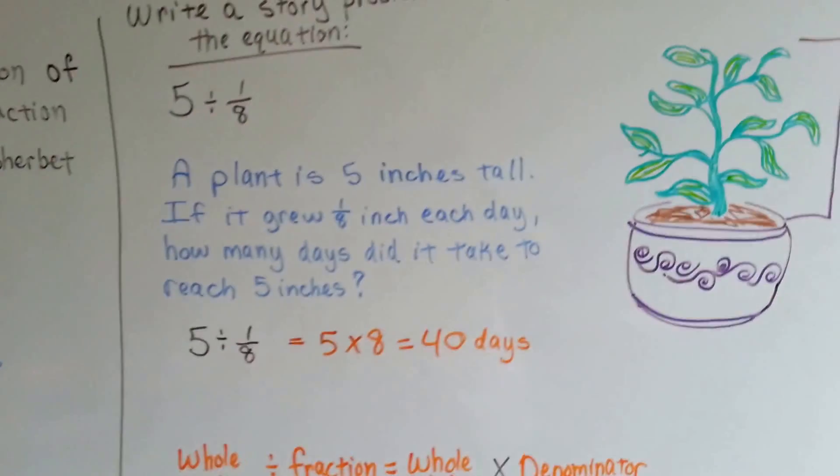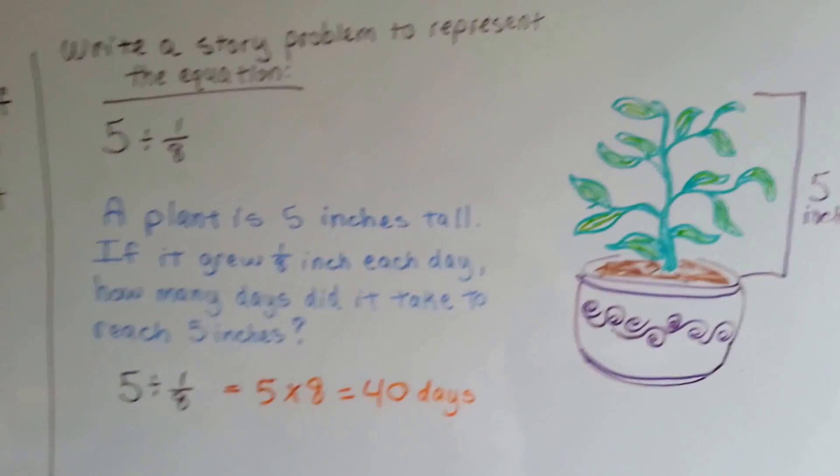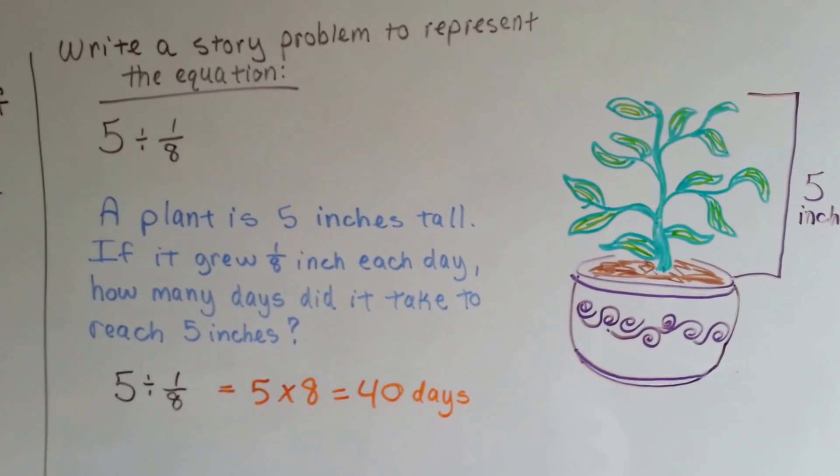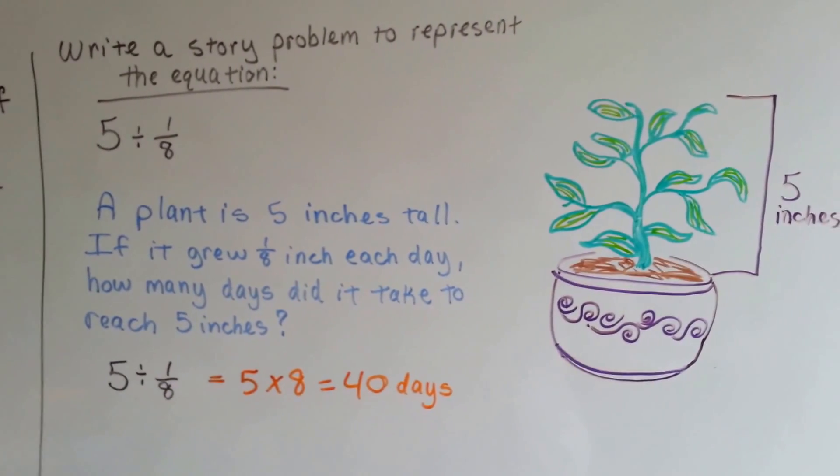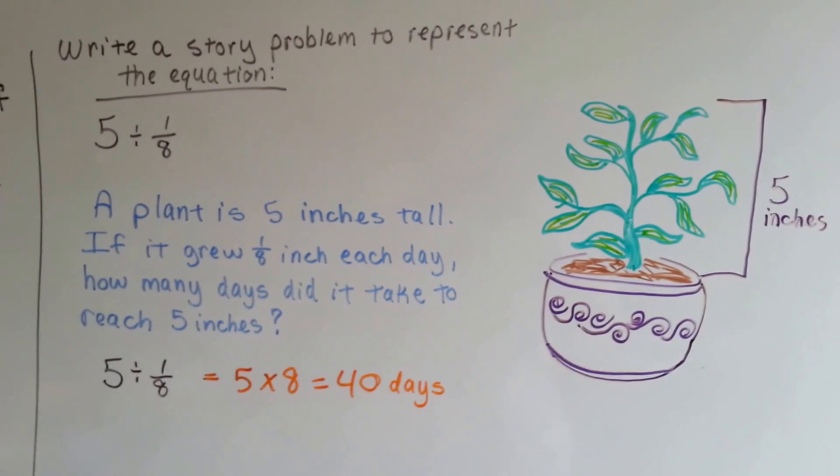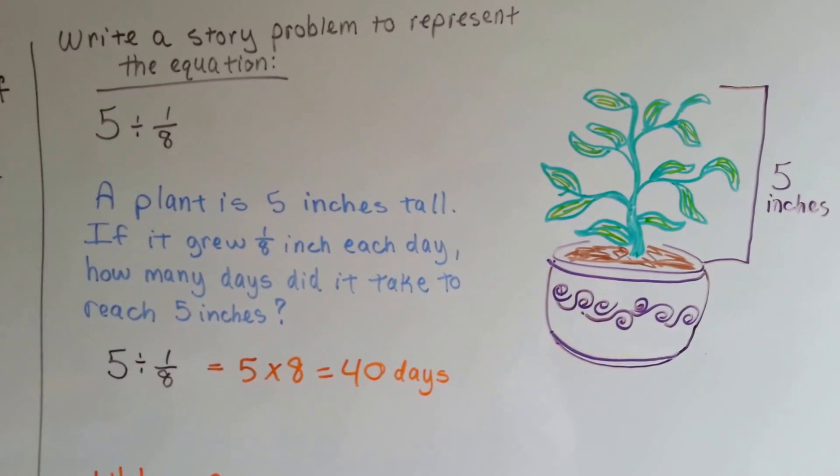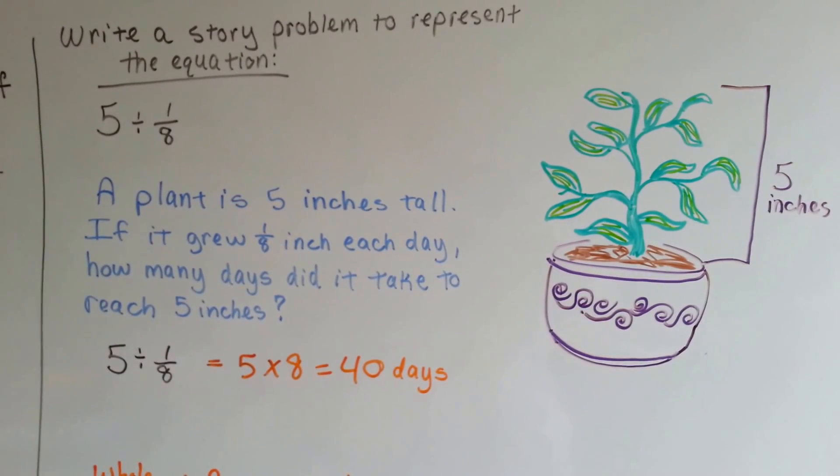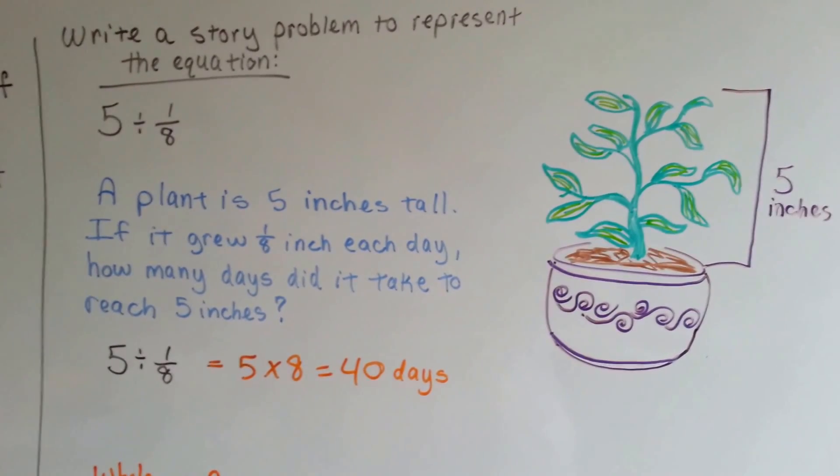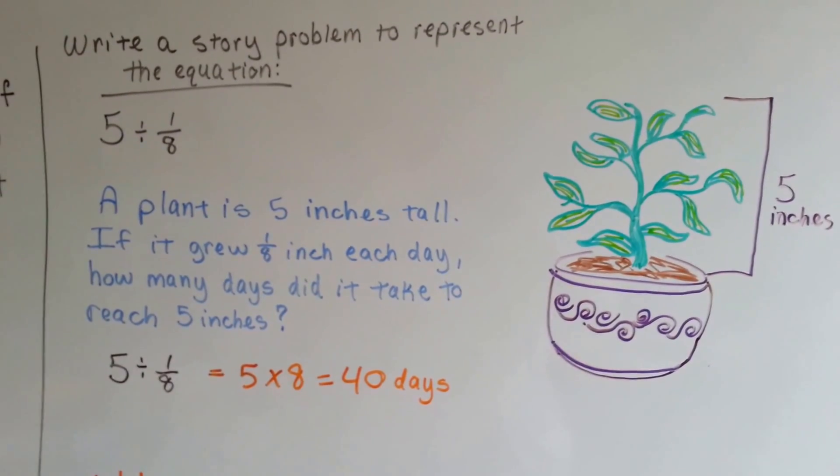Sometimes we have to write a story problem to represent an equation. So we can come up with any one we want as long as it makes sense. So for the equation 5 divided by 1/8, I came up with a plant is five inches tall. It grew an eighth inch each day. How many days did it take for it to reach five inches?